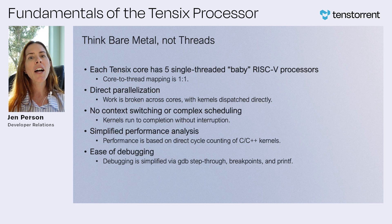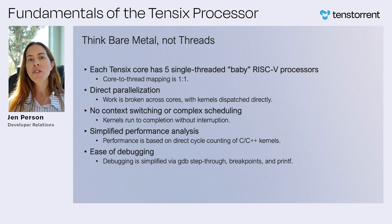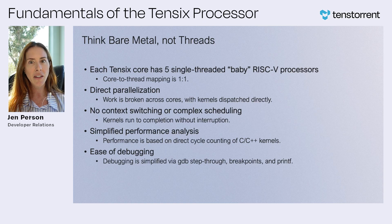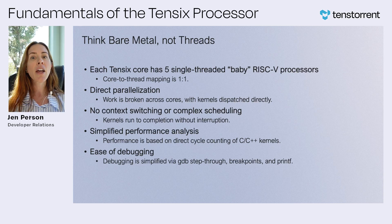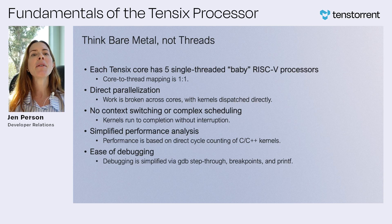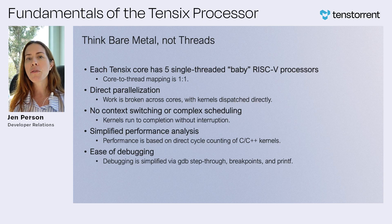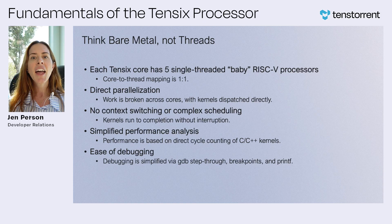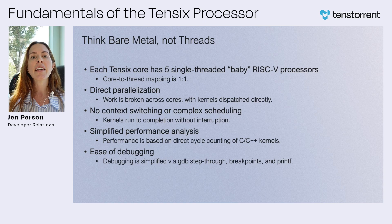Each Tensix core comes with five single-threaded baby RISC-V processors, and here's the key part: core-to-thread mapping is one-to-one. That means there's no complex scheduling and no context switching. Work is split across cores, and kernels are dispatched directly. Once a kernel starts running, it runs to completion without interruption. This makes execution predictable and avoids the overhead you'd see in traditional architectures that juggle multiple threads on a single core. Since performance is measured by direct cycle counting of C and C++ kernels, you get a clear view of execution without background noise from scheduling.